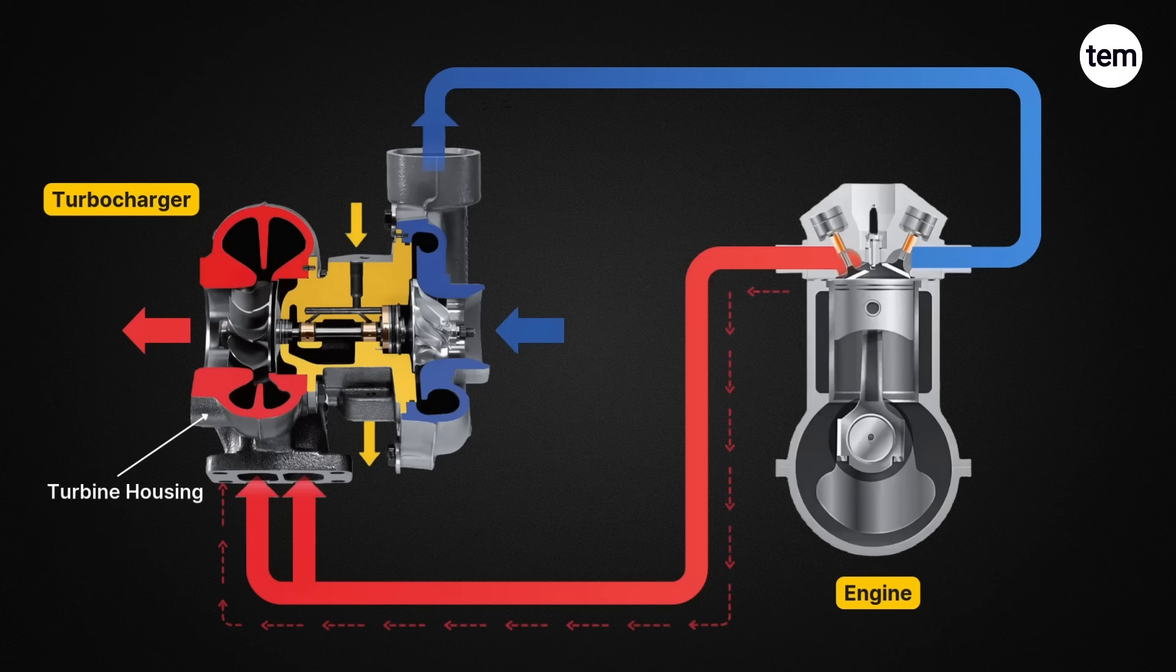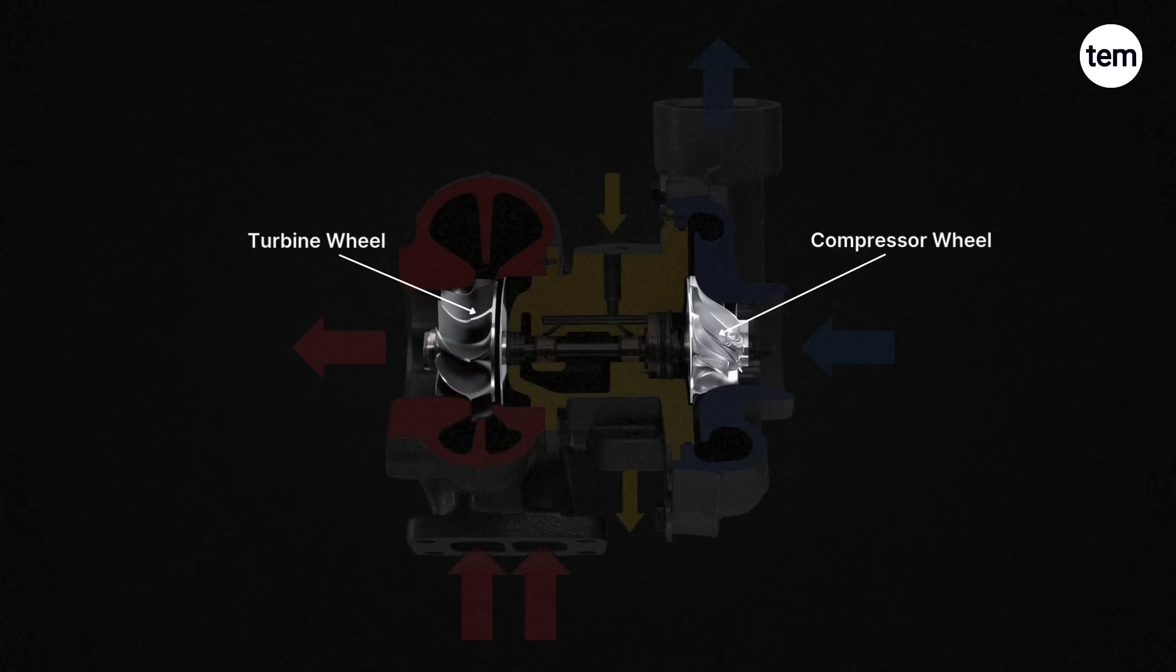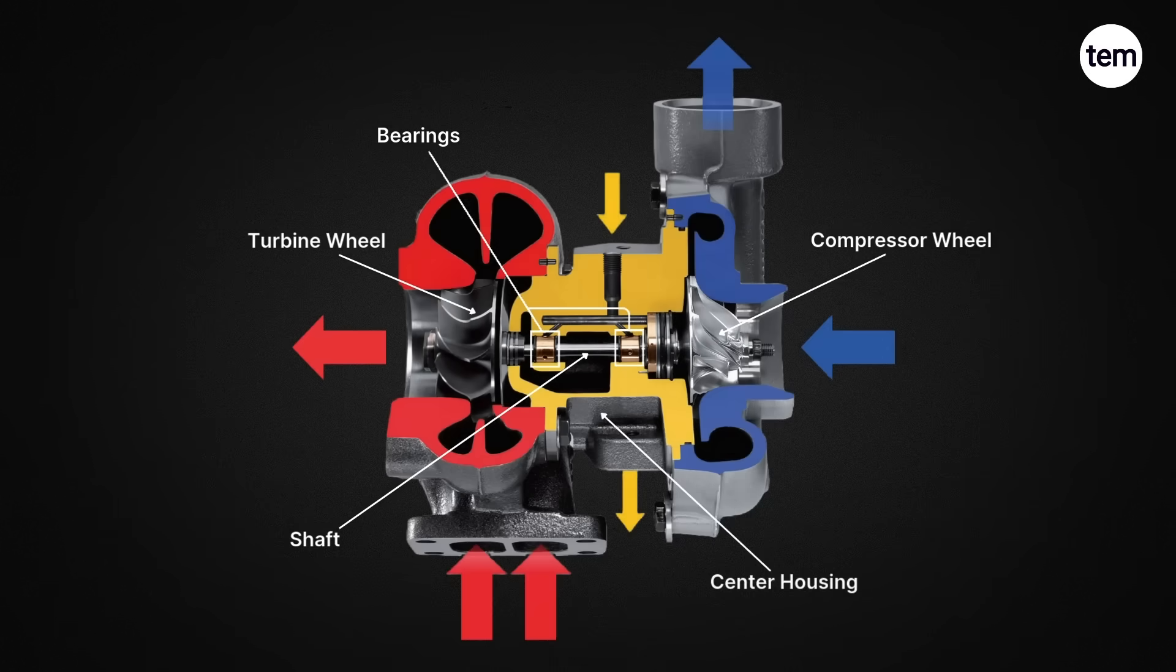The turbine housing is bolted to the engine's exhaust manifold, while the compressor housing connects to the engine's intake. The turbine wheel and compressor wheel are connected by a solid shaft that is supported by bearings inside the center housing.